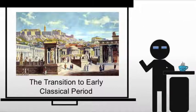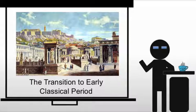We're entering into a transitional period, moving from the Archaic into the early Classical period. The Classical period is that high point of Greece — the Parthenon and all of that. And as we do, we're going to see major shifts in the architecture as well as the sculpture being created in this period.